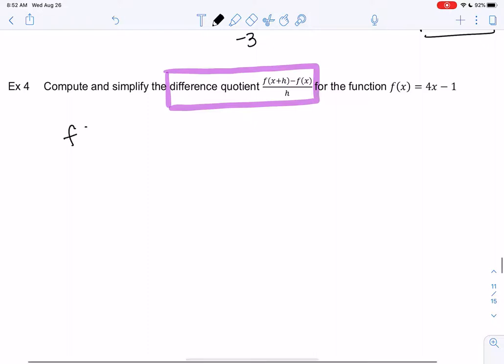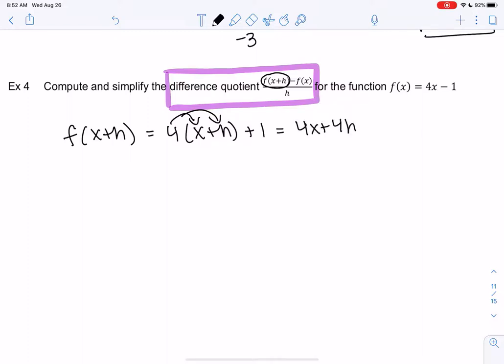What we're going to do is we're going to oddly plug in x + h. I'm going to take the function and replace x with x + h. That's what that first piece is asking me to do. So we get 4x + 4h + 1.